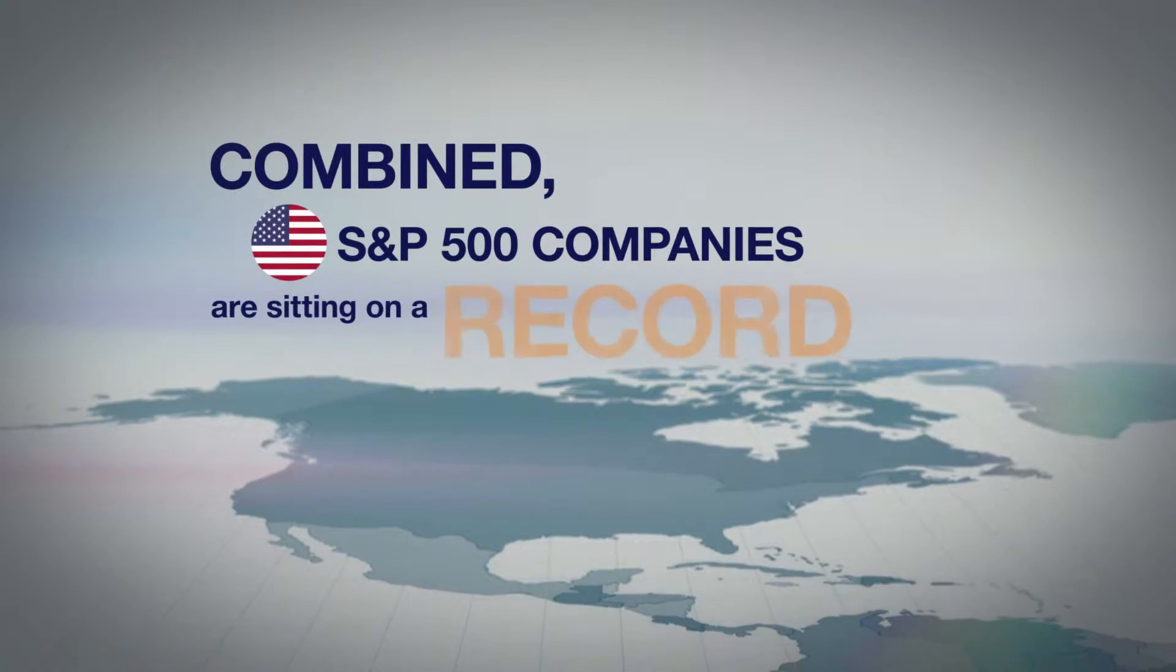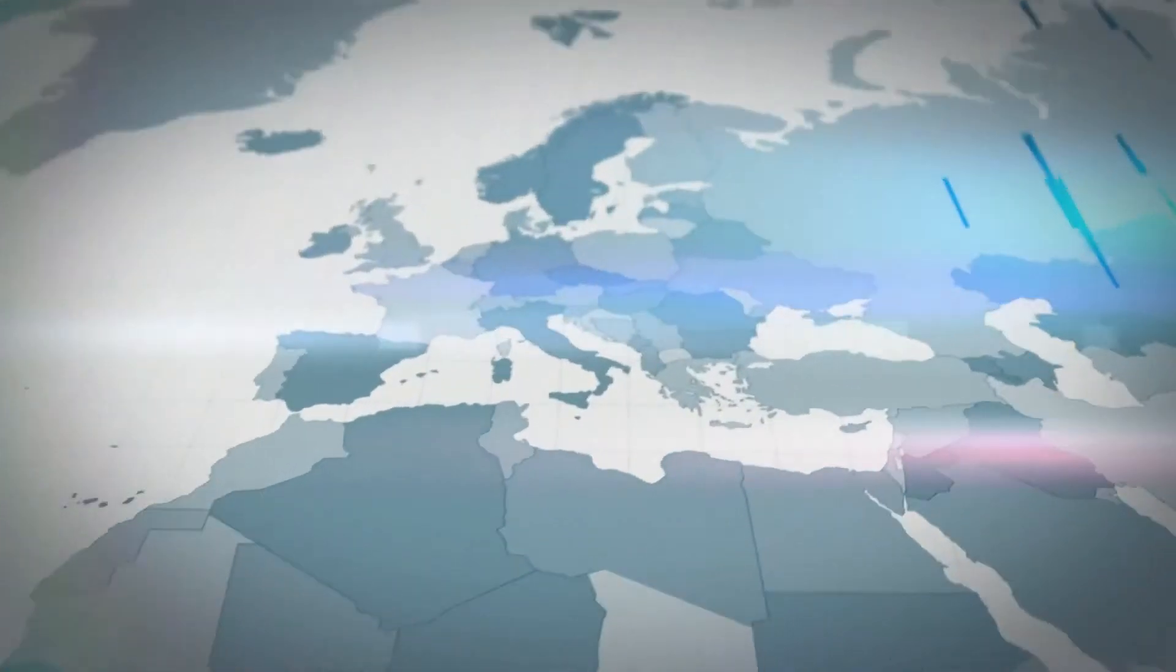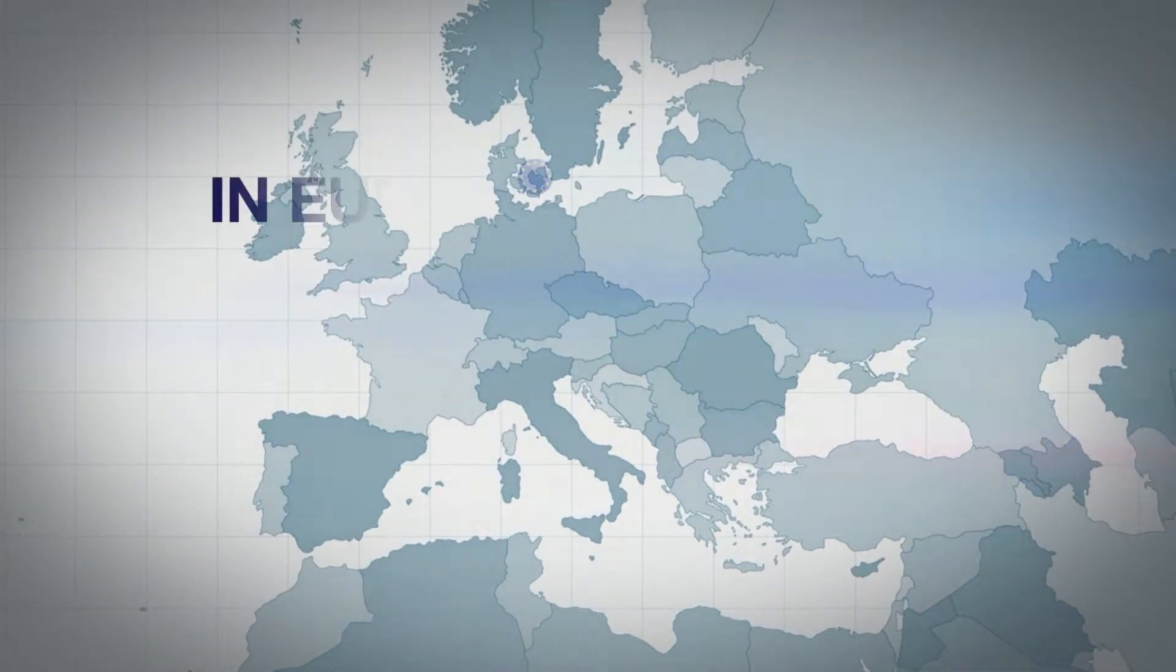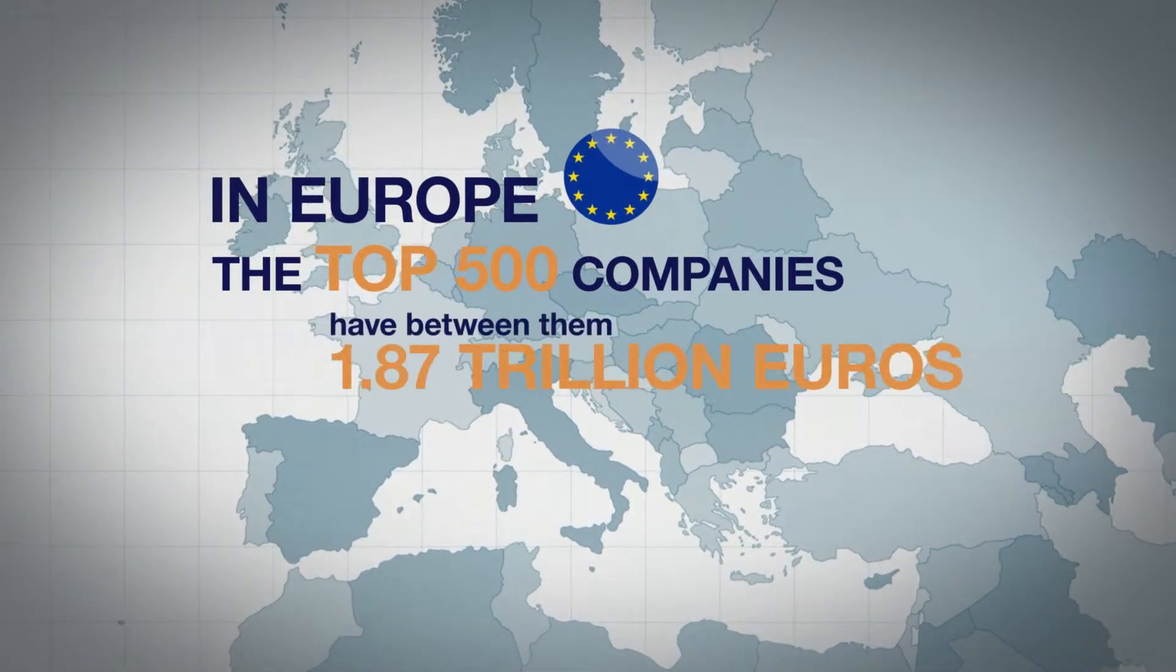Combined, S&P 500 companies are sitting on a record $1.7 trillion. And even in Europe, where cash reserves have declined for two years, the top 500 companies have between them 1.87 trillion euros.